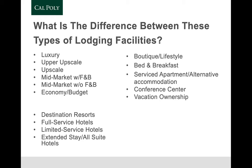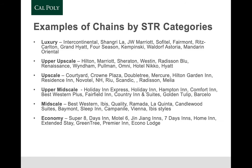On the right side of the spectrum you see boutique and lifestyle hotels, bed and breakfast, service apartments, conference centers, and vacation ownership. The first four we'll cover in more detail. Vacation ownership — the timeshare element — is now part of major brands including Hilton and Marriott. These are examples of chain codes from STR, and we'll discuss STR Global further as the class progresses.